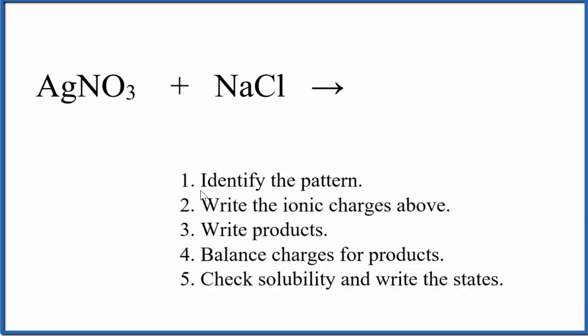So first off let's identify the pattern here. So we have a metal silver bonded to a group of nonmetals. This is a polyatomic ion. Over here we have a metal bonded to a nonmetal. So metal nonmetal, metal nonmetal. That usually means we're dealing with a double displacement reaction and we should have a precipitate forming.